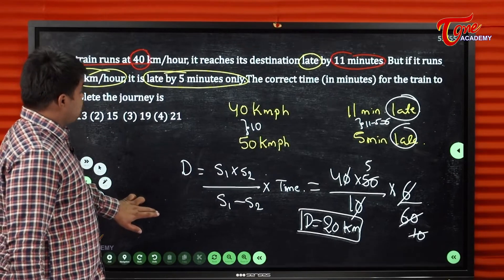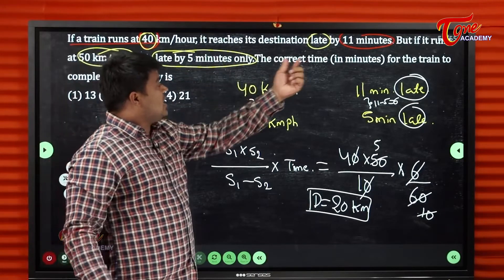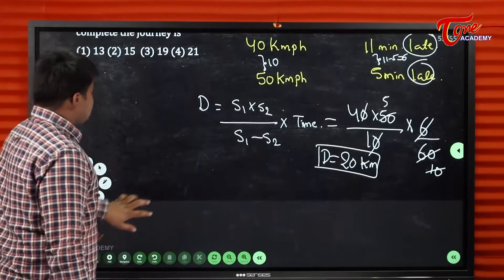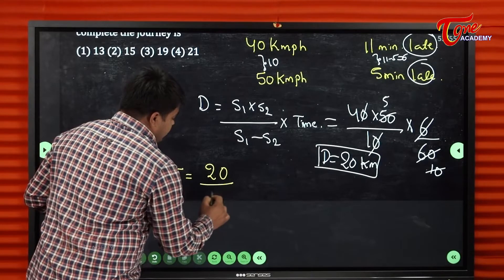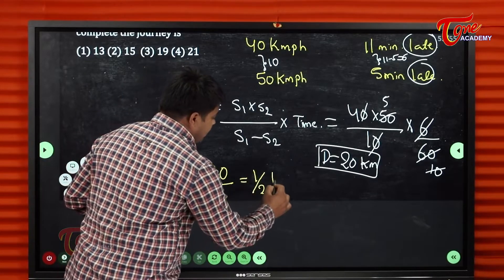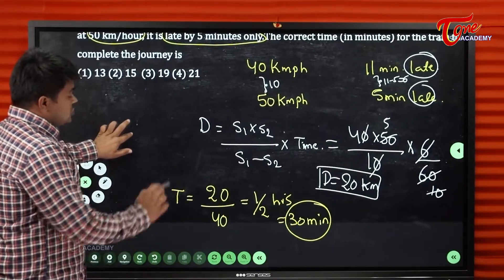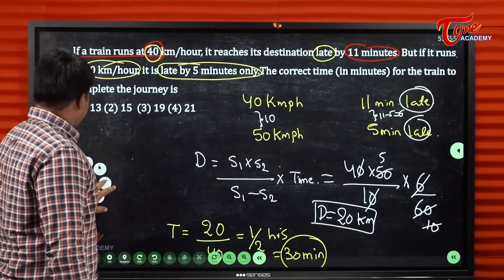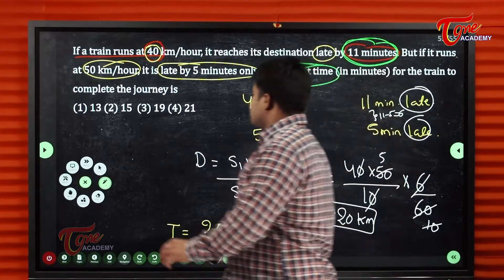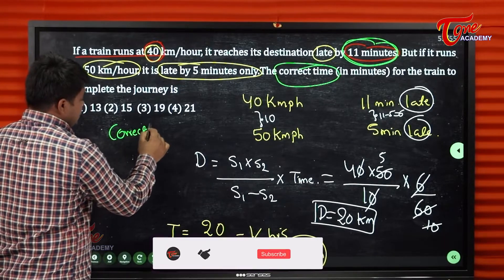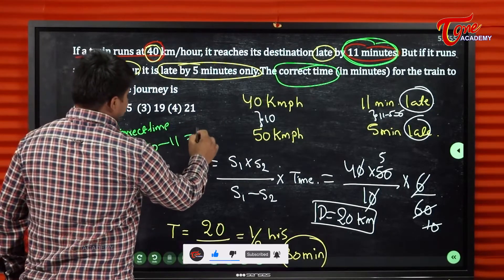Now find the correct time. Distance is 20 km at 40 km/h: time = 20/40 = half hour = 30 minutes. But this was 11 minutes late, so correct time = 30 − 11 = 19 minutes. Verification: at 50 km/h, time = 20/50 = 2/5 hours = 24 minutes. Correct time = 24 − 5 = 19 minutes. Both confirm the correct time is 19 minutes.